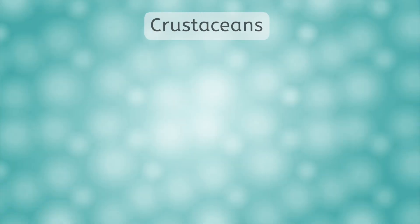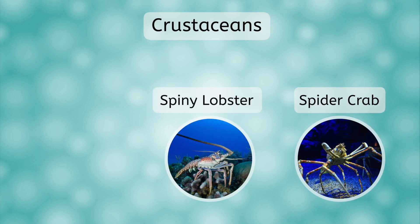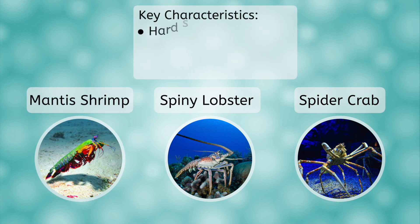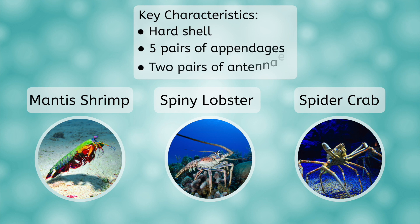Our final subphylum is Crustacea. These are mainly aquatic animals, more commonly known as crabs, lobsters, and shrimp. These animals have a hard shell to protect their body, five pairs of appendages, and two pairs of antennae. An interesting adaptation is the fusion of their head and thorax to form a single structure — the cephalothorax.